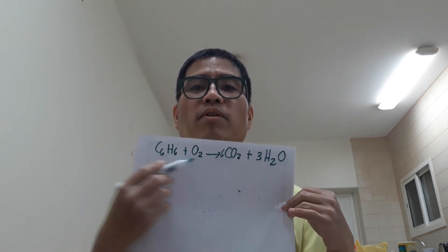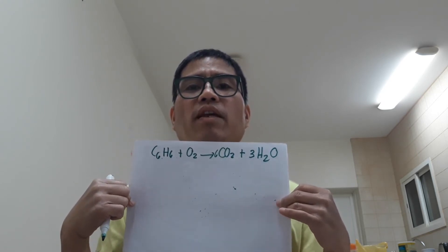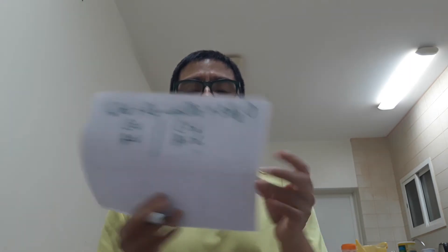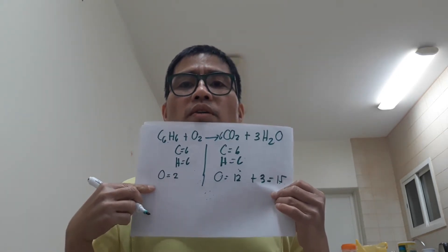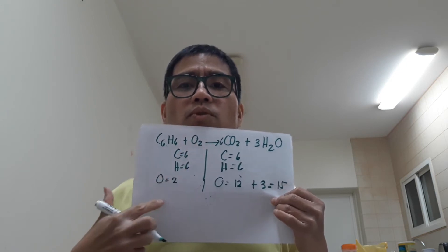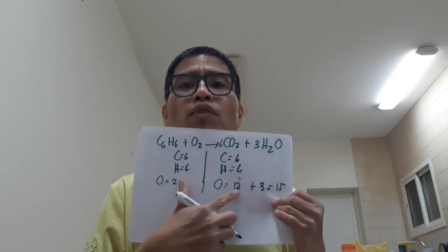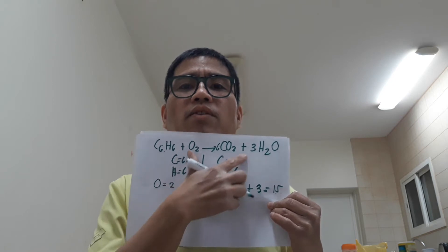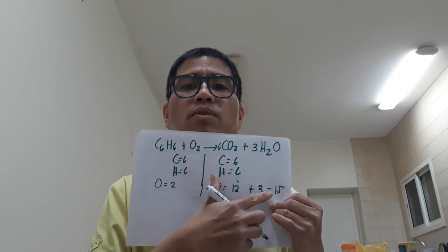Carbon is confirmed balanced. Hydrogen is already balanced. Now for oxygen: on the right side, 6CO₂ contributes 12 oxygen atoms, and 3H₂O contributes 3 oxygen atoms, for a total of 15 oxygen atoms on the product side. On the reactant side, oxygen gas (O₂) with coefficient x contributes 2x atoms. The reactant side is deficient, so we set 2x equal to 15. Solving gives x equal to 15/2 (fifteen halves).